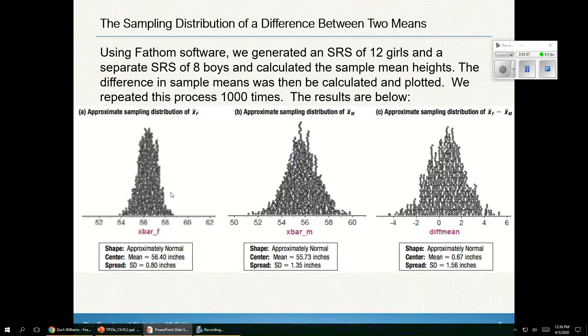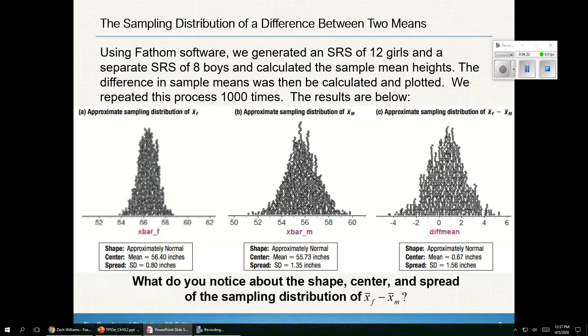And it looks like this where the center of this distribution is 0.67 and the standard deviation is 1.56. Again, this is like me looking at the heights of 12 ten-year-old girls and I put one dot on here. And then I take 8 ten-year-old boys, measure their height, get an x-bar, and I have one dot on here. When I subtract those two numbers, I get one dot on this graph. And then I repeat it over and over and over. It says they did it a thousand times. What do you notice about the center, shape, and spread of this?